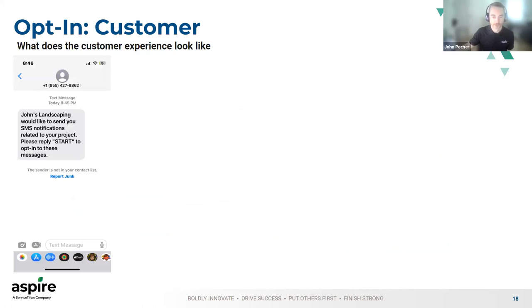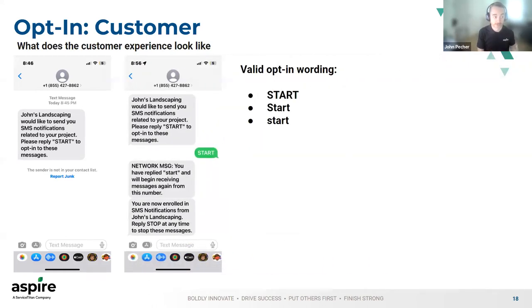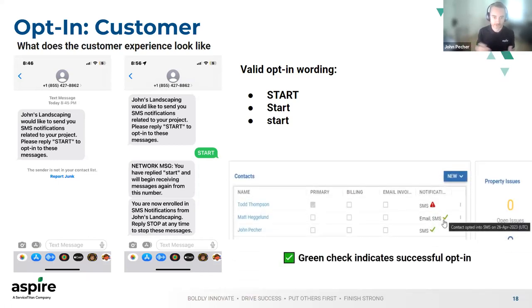This is just a quick run-through — this might be pretty familiar if you've already received text messages about any number of things. This would be the initial text message saying, hey, this system from Aspire would like to send you SMS notifications — reply start. The customer replies start, and then they get that confirmation message: you have verbally consented to start receiving notifications. You can reply stop at any time. It's not case-sensitive — you can reply any way you want. Then that green check shows up next to that contact and they'll start receiving messages for that property.